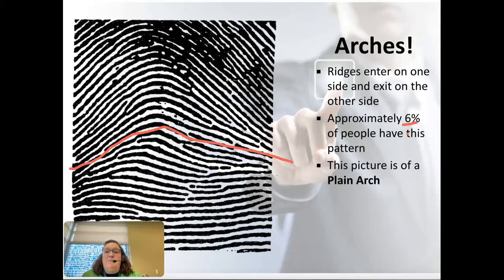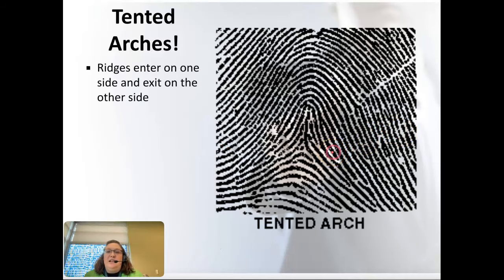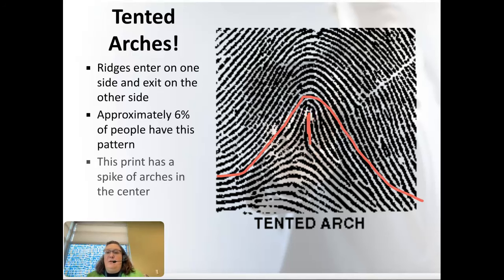A plain arch is just like a little hill — it comes in and goes out. A tented arch also enters on one side and leaves on the other, but notice there's a spike or spine that forms in the center of the pattern — that's why it's called a tented arch.